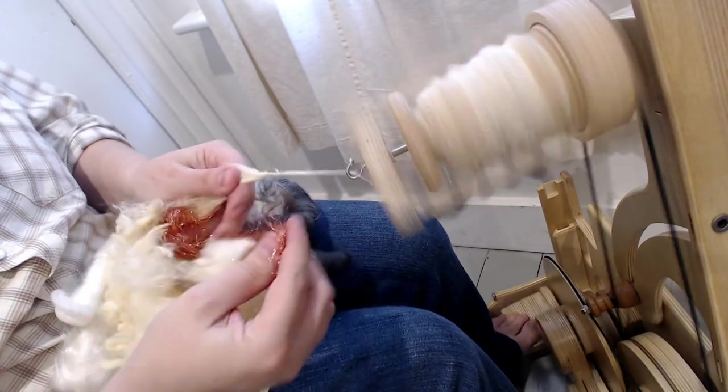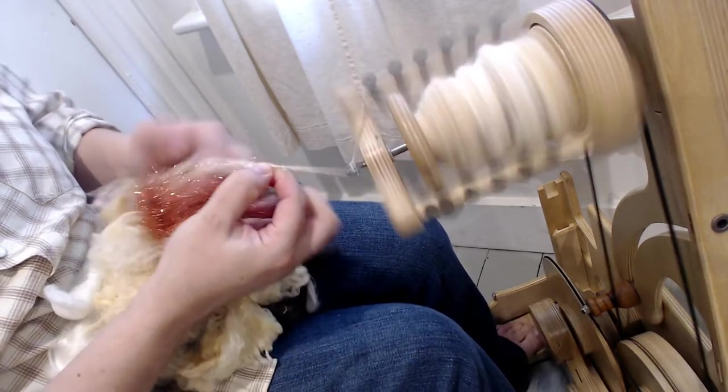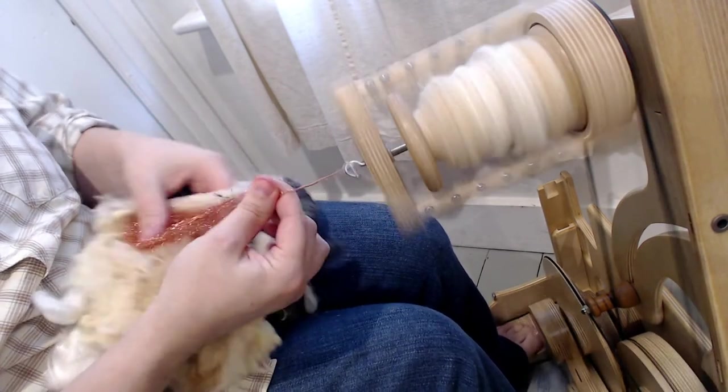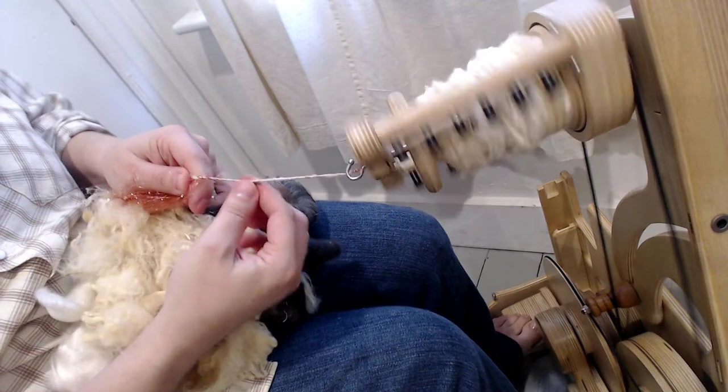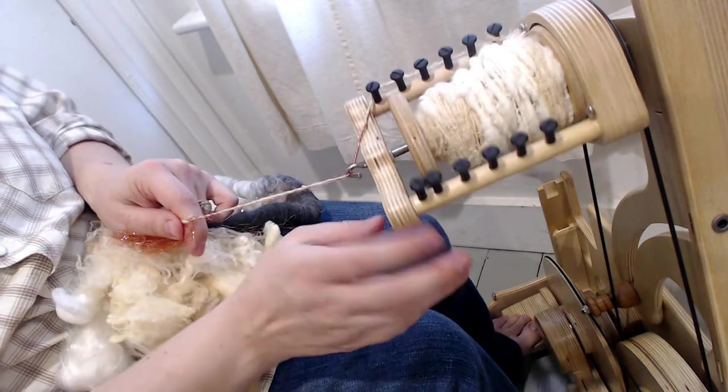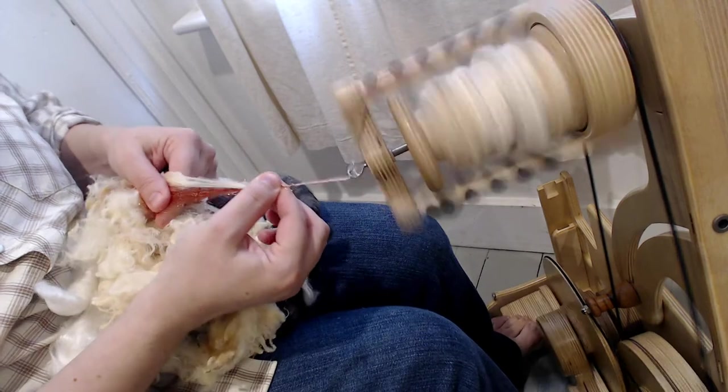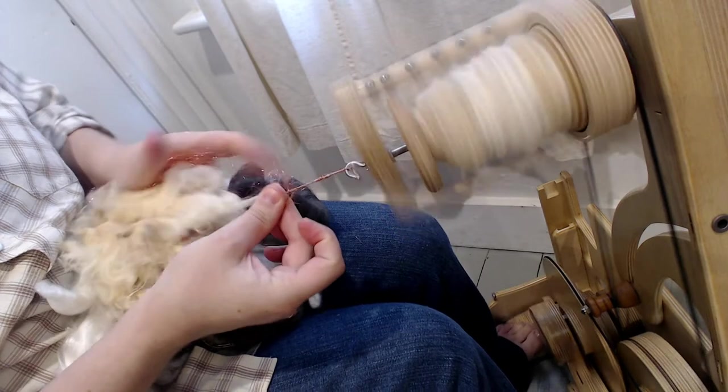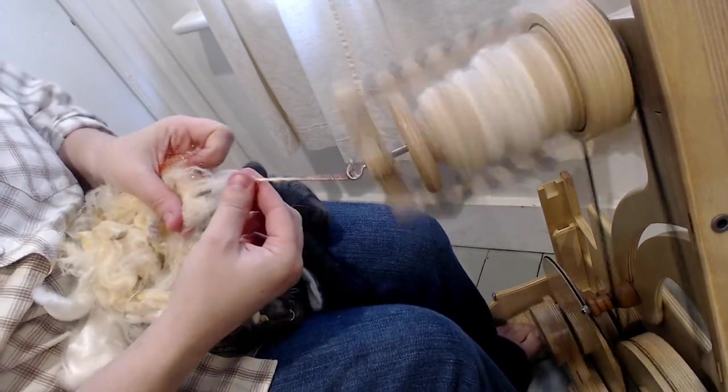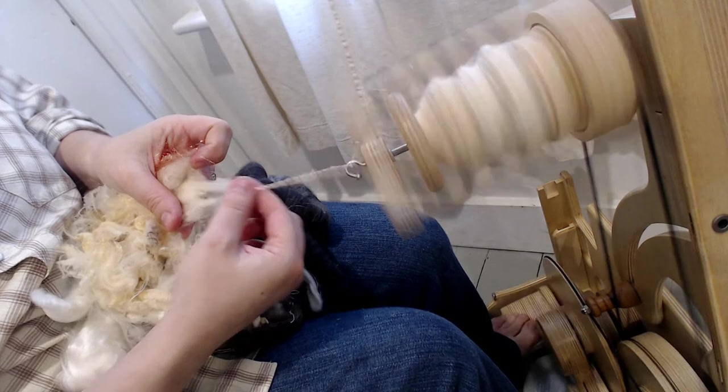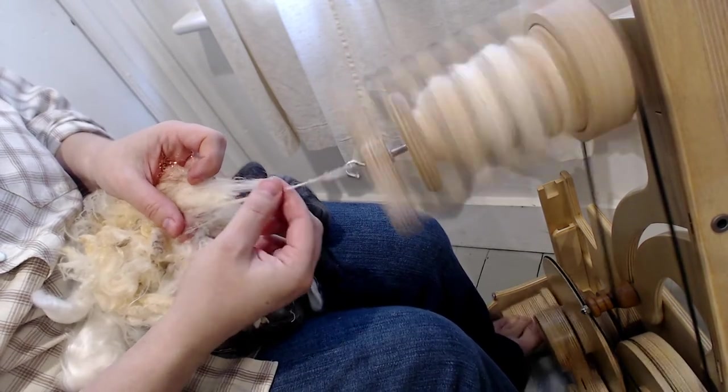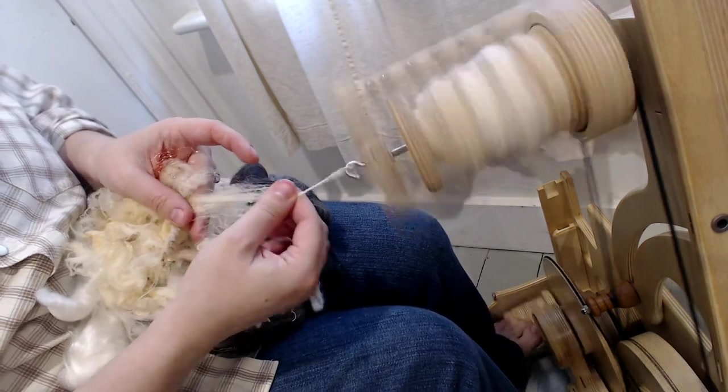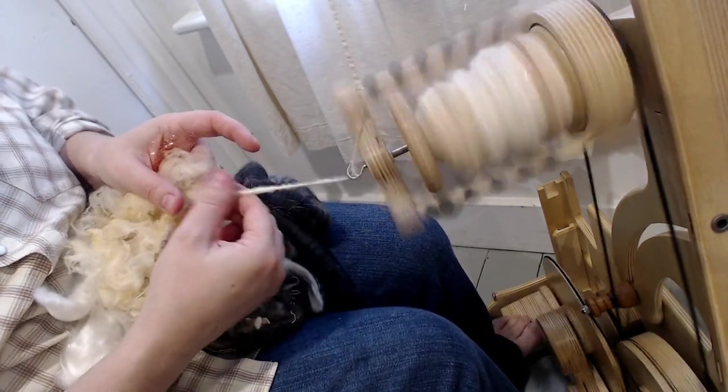So as you're practicing you can try adding a little bit of sparkle or spinning two different types of fiber at the same time. That's a fun art yarn technique. So I have some Angelina sparkle going in with this merino and this is just raw merino right off of the sheep. I picked this fleece up at my local sheep and wool festival.